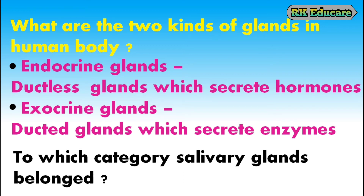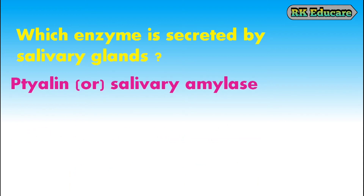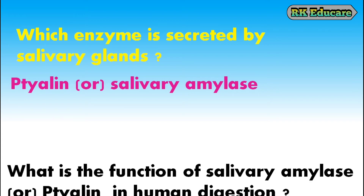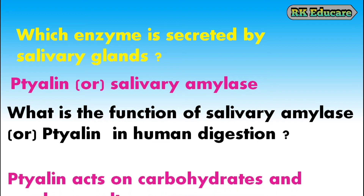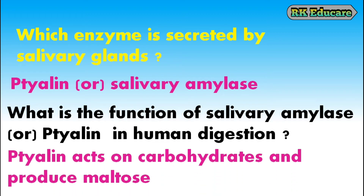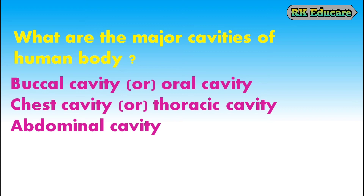To which category do salivary glands belong? Salivary glands belong to exocrine glands. Which enzyme is secreted by salivary glands? Salivary glands secrete ptyalin or salivary amylase. What is the function of salivary amylase or ptyalin in human digestion? Ptyalin acts on carbohydrates and produces maltose. What are the major cavities of the human body? There are three major cavities: buccal cavity or oral cavity, chest cavity or thoracic cavity, and the abdominal cavity.